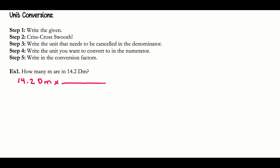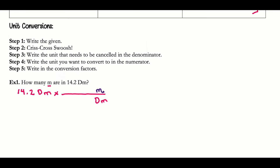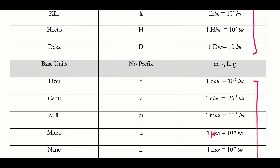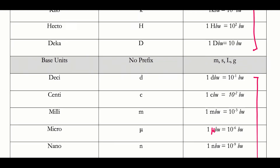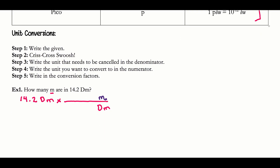Step two: crisscross swish. Step three: write the unit that needs to be cancelled in the denominator. Since I'm trying to get into meters, I want to get out of decameters, so I put decameters on the bottom. Step four: write the unit you want to convert to in the numerator — meters on top. Then write the conversion factor. Looking at the table, one decameter equals 10 meters, so I put that relationship in: one decameter equals 10 meters.